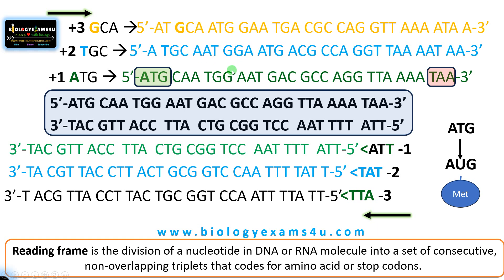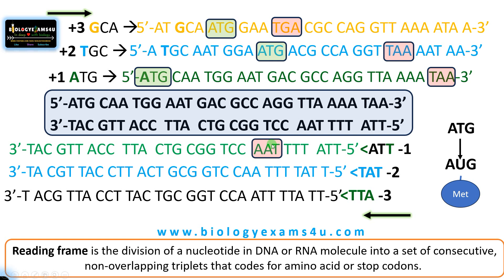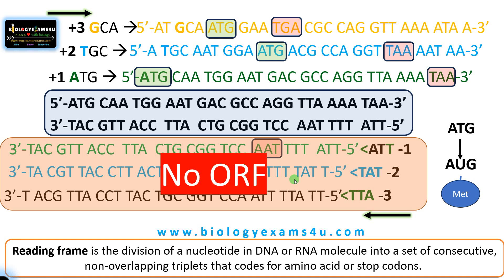In the plus two frame there is also ATG and TAA — a start codon and a stop codon. In the plus three frame there is ATG and TGA, where UGA is a stop codon. In the minus one frame there is a stop codon but no start codon. In the minus two and minus three frames also there is no start codon, only a stop codon. Therefore these three minus-strand sequences do not have an ORF.